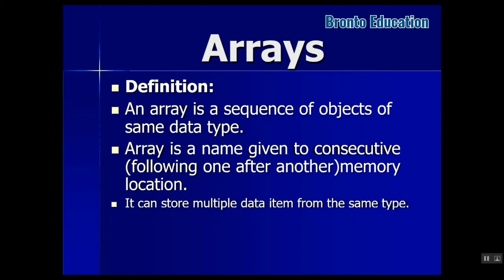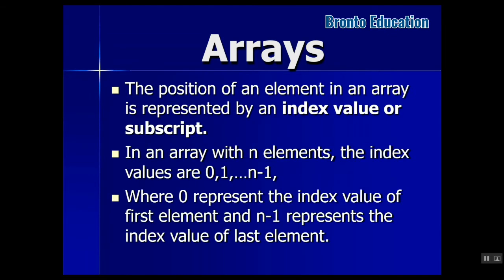An array is a name given to consecutive, following one after another, memory locations. It can serve multiple data items of the same type. The position of an element in an array is represented by an index value or subscript. In an array with n elements, the index values are from 0 to n minus 1, where 0 represents the first element and n minus 1 represents the last element.